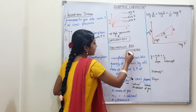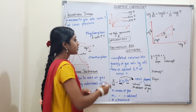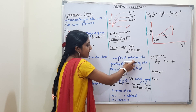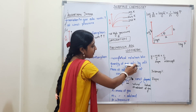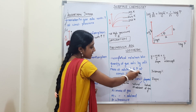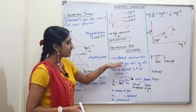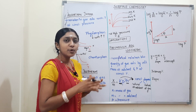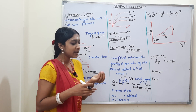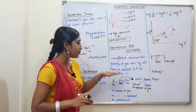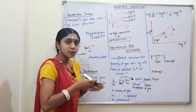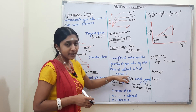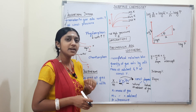Next is the Freundlich adsorption isotherm, which is one of the most important topics. It is an empirical relation between the quantity of gas adsorbed per unit mass of adsorbent and pressure at constant temperature. This empirical relation, proposed by Freundlich, gives the relationship between the amount of gas adsorbed per unit mass of adsorbent and pressure at constant temperature.